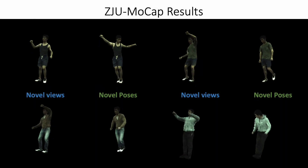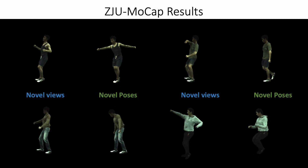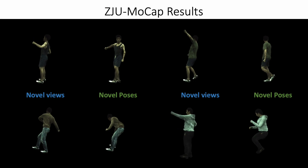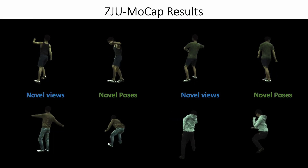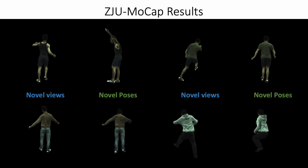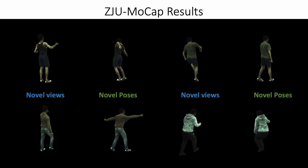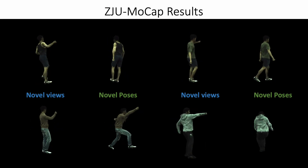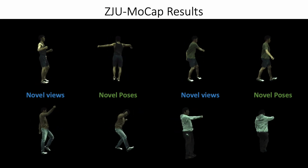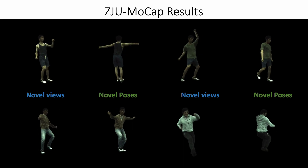We now show the captured and rendered human subjects from the ZJU MoCap dataset. The left columns show novel views and the right shows novel pose reanimation.